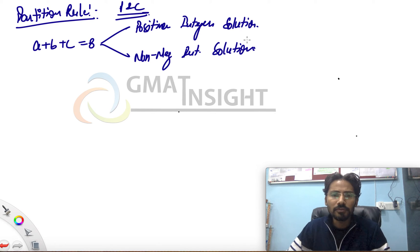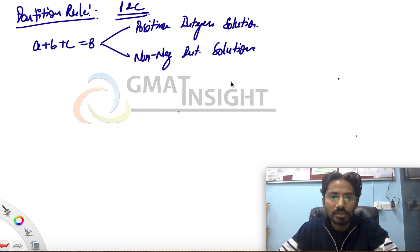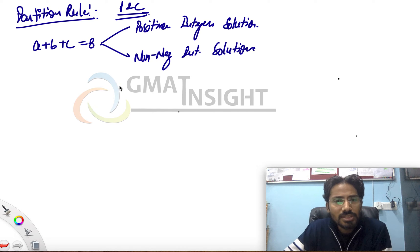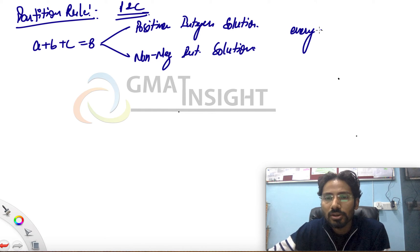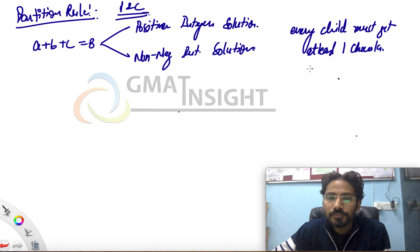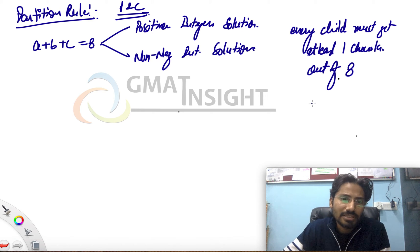Let me give you a brief of what kind of questions we may come across. Here is a question for our discussion: a guy purchases eight chocolates and there are three children among whom the eight chocolates have to be distributed. Every child must get at least one chocolate out of eight. In how many ways can the chocolates be distributed, considering all the chocolates are exactly identical?